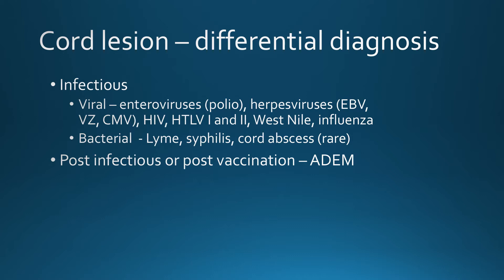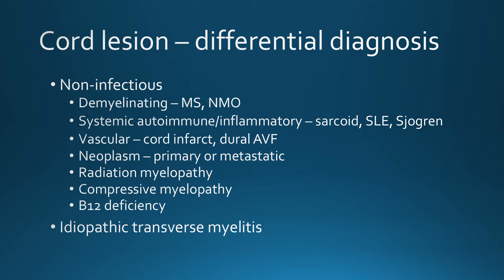Post-infectious or post-vaccination causes include acute disseminated encephalomyelitis. Non-infectious causes include demyelinating diseases such as MS and neuromyelitis optica, autoimmune disorders most commonly sarcoid and occasionally SLE and Sjögren's syndrome, vascular lesions such as cord infarct and dural AV fistula, primary or metastatic cord tumors, radiation myelopathy, compressive myelopathy, and metabolic disorders such as B12 deficiency. The term idiopathic transverse myelitis is a wastebasket term for an acute inflammatory cord lesion where we don't know the etiology.